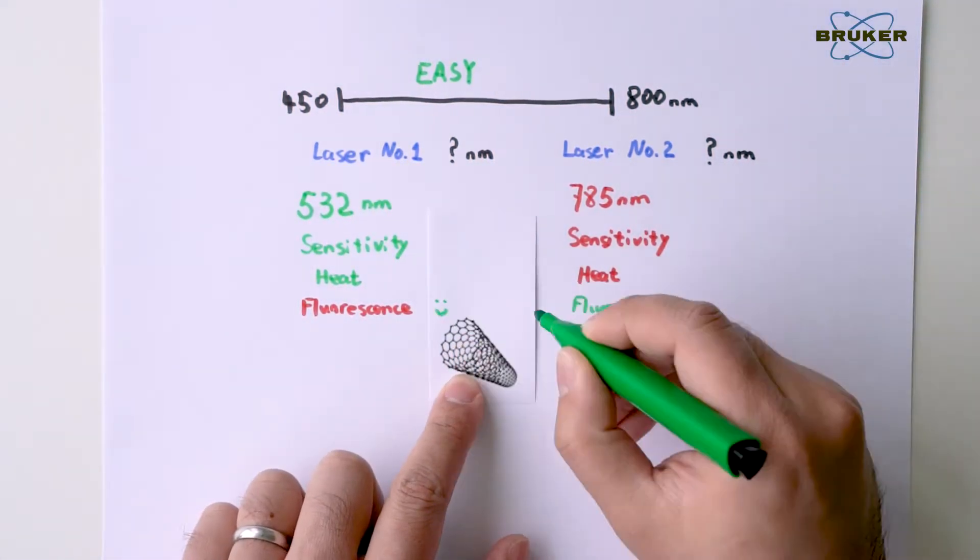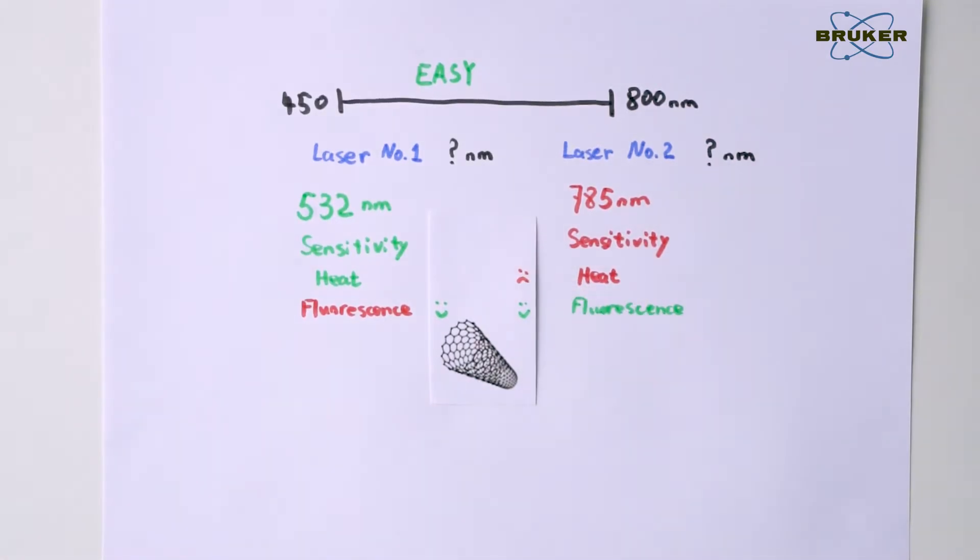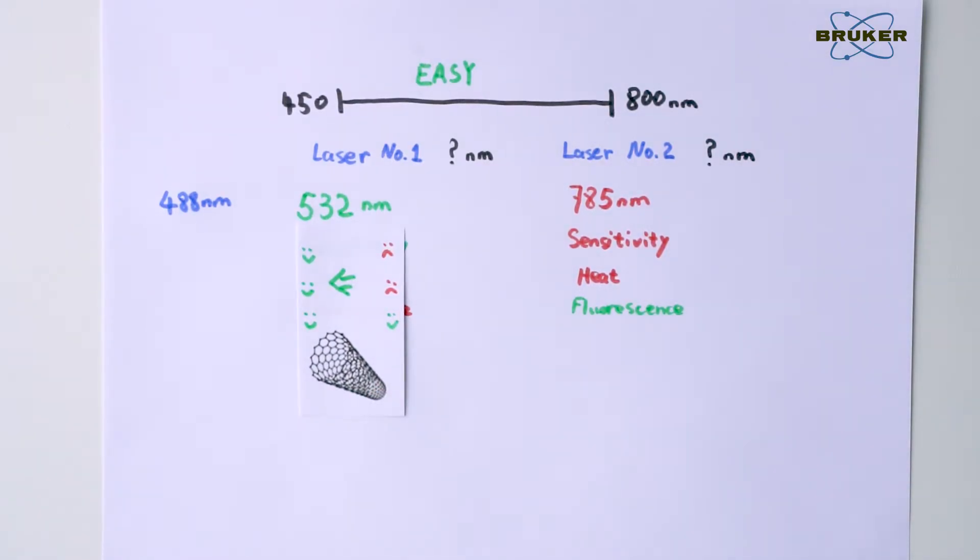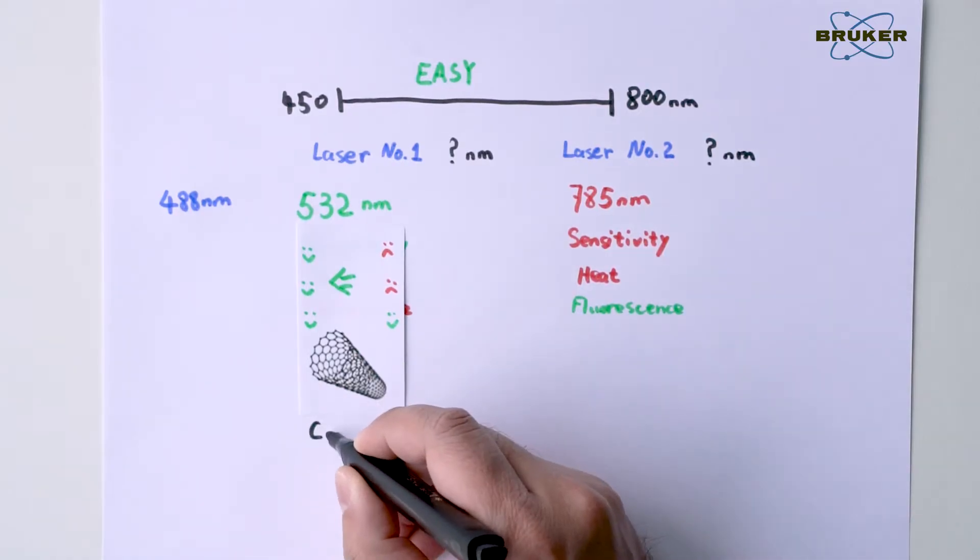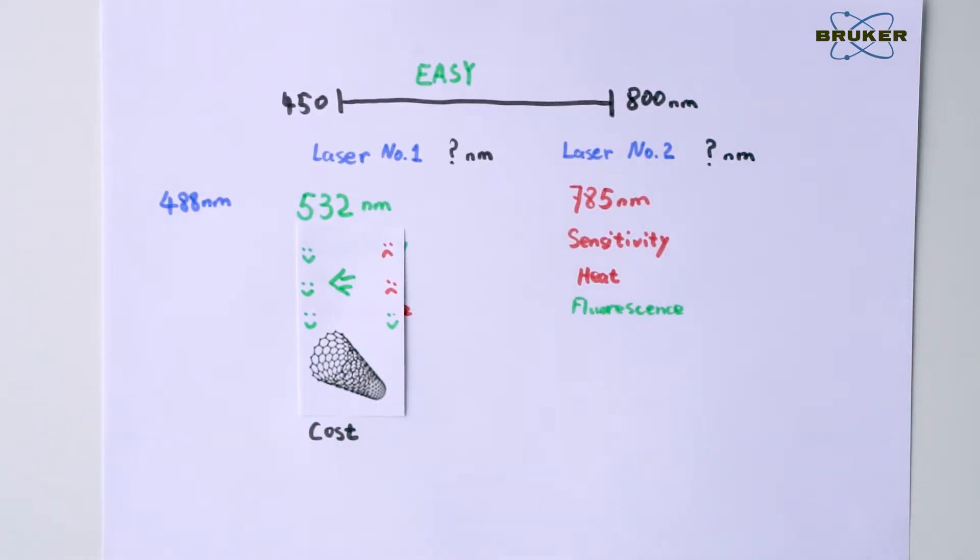For example, carbon nanotubes don't have fluorescence at short wavelengths but are likely to get burned by near-infrared lasers. So we can choose a blue laser for the best Raman signal, but a green laser will still provide similar results and is much more cost effective. Most researchers are relying on 532 nm lasers.